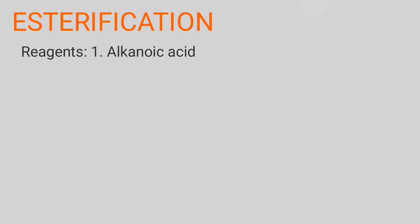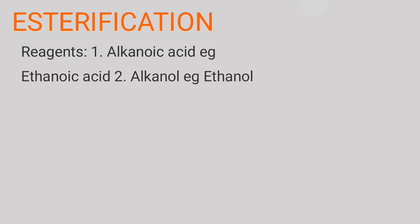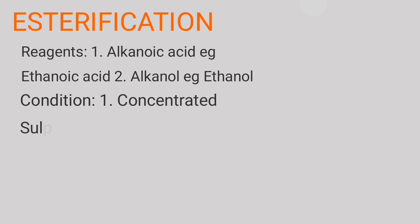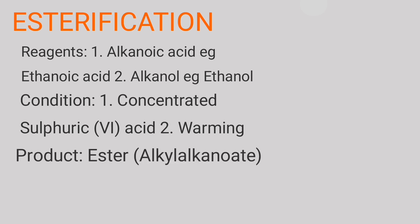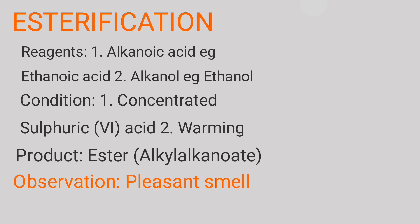Welcome. In this lesson we will discuss chemical properties of alkanols. The last chemical property is esterification. This is the chemical process in which an alkanol is reacted with an alkanoic acid in the presence of concentrated sulfuric acid and warming. The reagents used are any alkanoic acid such as ethanoic acid or propanoic acid, and any alkanol. The product is an ester, whose chemical name is alkyl alkanoate. An observation made during this reaction is a pleasant smell.